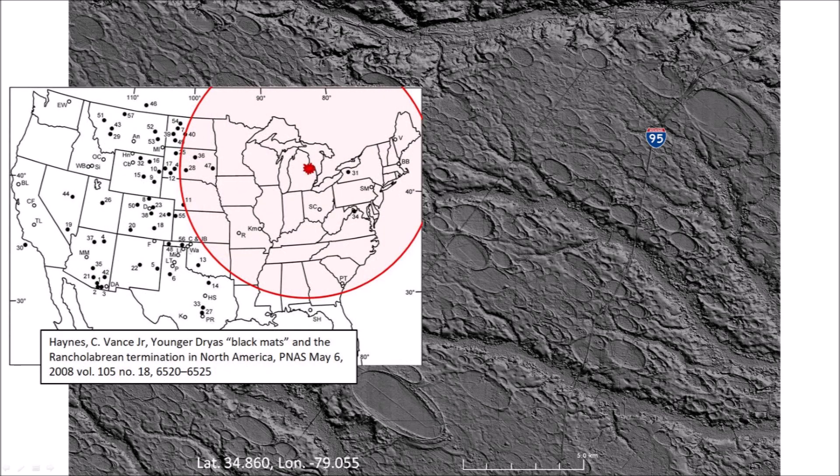The range of the ballistic trajectories was approximately 1,500 kilometers from the Great Lakes. A paper by Vance Haynes published in 2008 shows the location of black mats found at the Younger Dryas boundary. The black mats resulted from vegetation smothered by ice crystals and snow deposited beyond the range of the ballistic sedimentation. Animals outside of the 1,500-kilometer kill zone of the ejecta curtain could have survived, but would have had to adapt to the colder climate of the Younger Dryas cooling event that lasted 1,200 years.